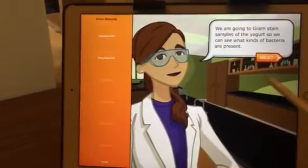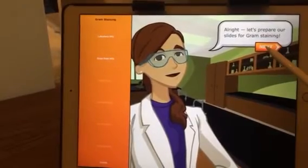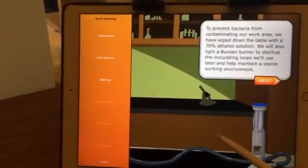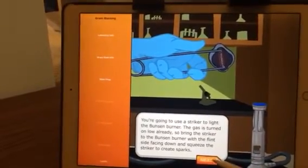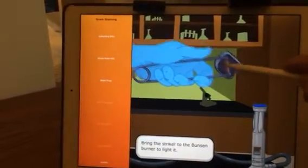We are going to gram stain samples. Alright, let's prepare our slides for gram staining. To prevent bacteria from contaminating our work, you're going to use a striker to light the Bunsen burner. Bring the striker to the burner to light it.